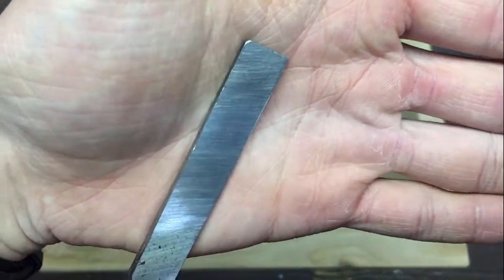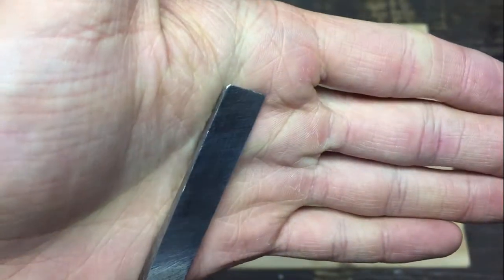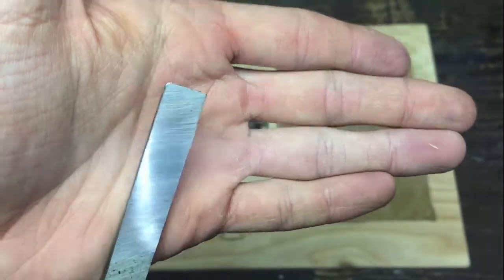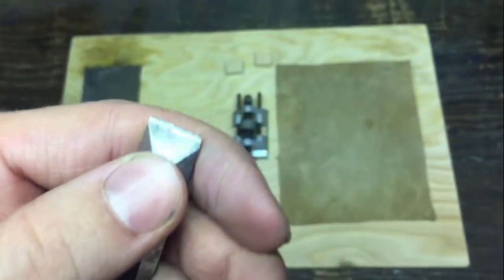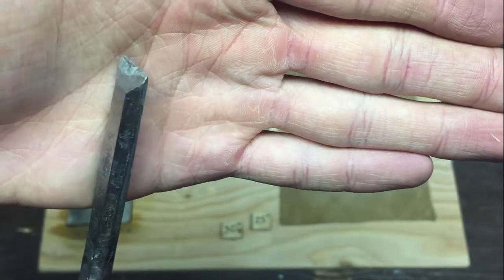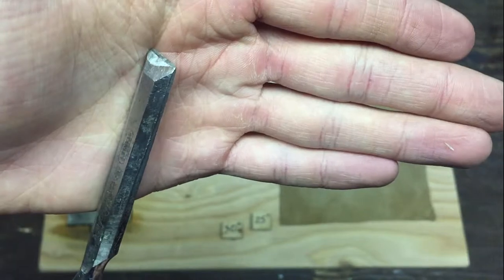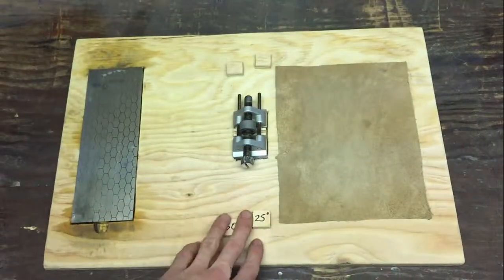Once the back's perfectly flat, it's time to do the bevel. And this is the hardest part and the longest for this because the chisel is completely destroyed. There's a couple of angles on it, but I'm going to put a new angle on it, such as a 25 degree.